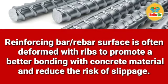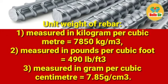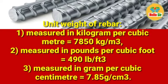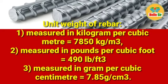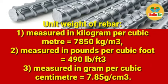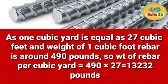The unit weight of rebar measured in kilogram per cubic meter is equal to 7850 kg/m³. Converting to pounds per cubic foot, it comes out to 490 pounds per cubic foot. Measured in gram per cubic centimeter, it is 7.85 gram per cubic centimeter.